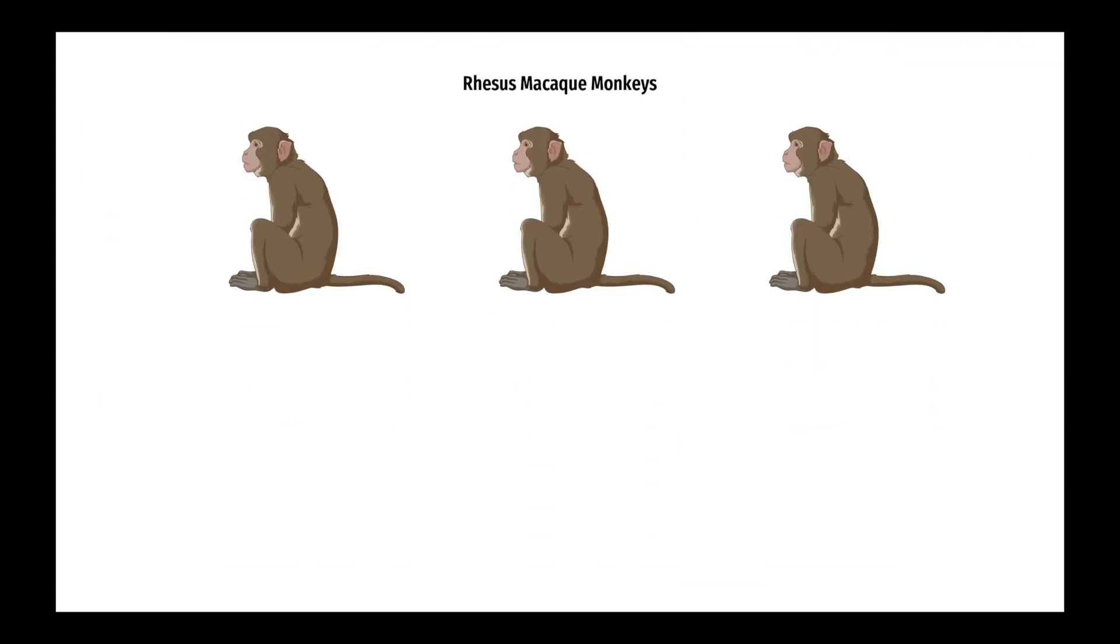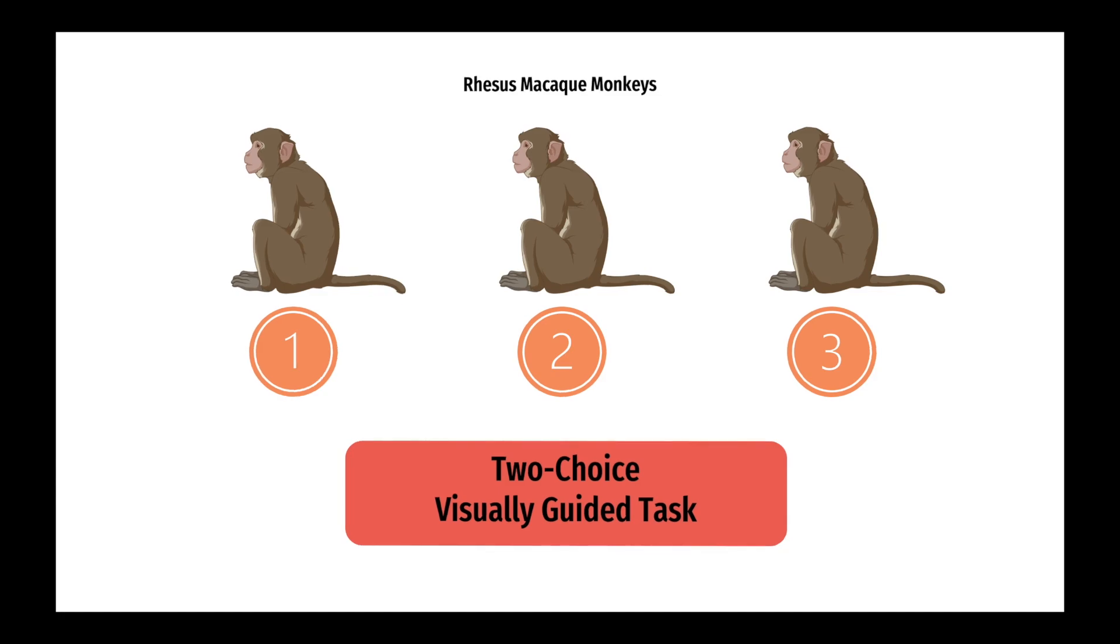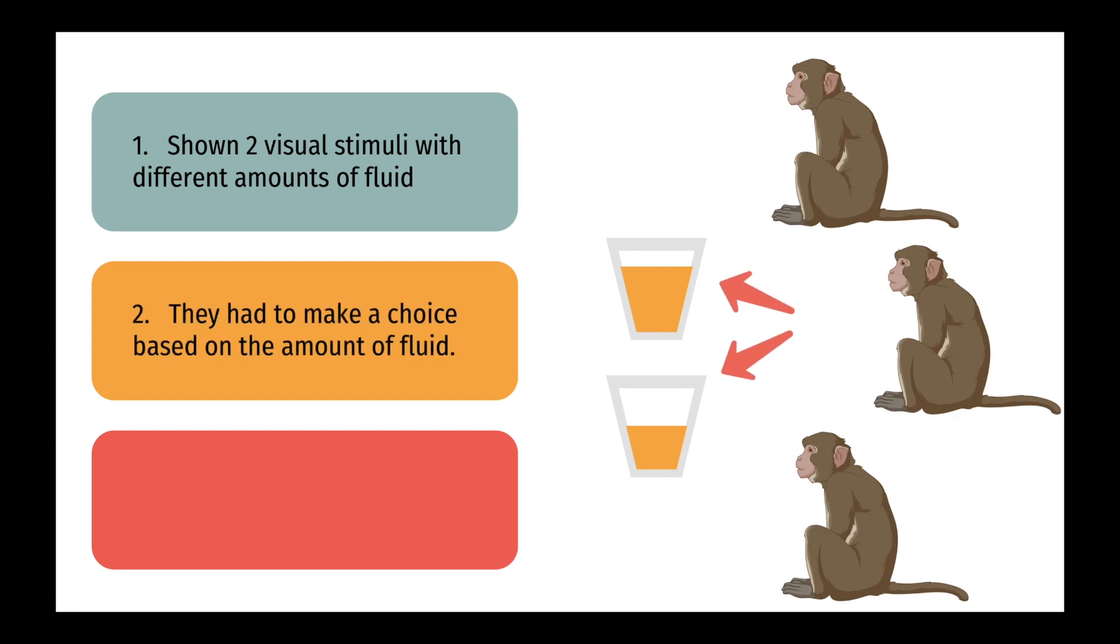To start, the researchers observed three rhesus monkeys participating in a task known as the two-choice visually guided task. In this task, the monkeys were shown two visual stimuli that were associated with different fluid amounts. They were made to choose between one large amount and one small amount by moving their hand to the left or right of the response button.